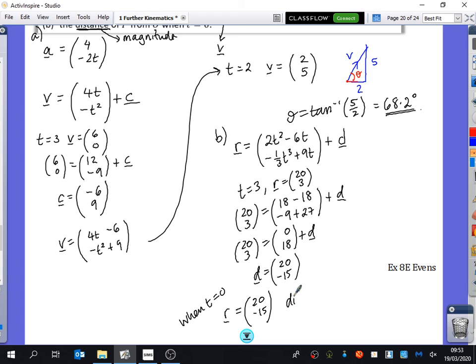But they actually want to know the distance. So you better Pythagorise your 20 squared plus your 15 squared. That's a 3, 4, 5 triangle. So is it 25? 25 meters. And that's us done with mechanics. Okay. So there's a few exam questions that you can try in that booklet.